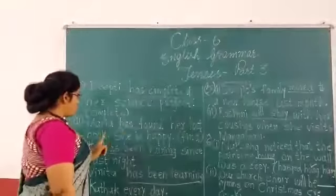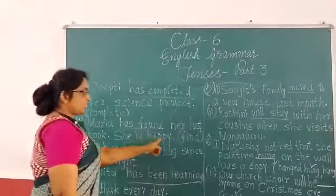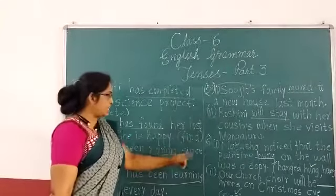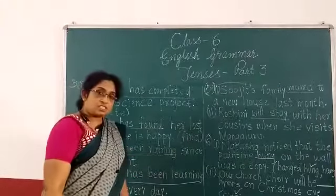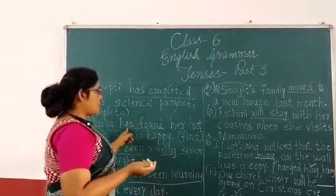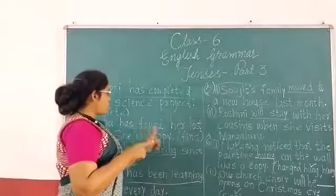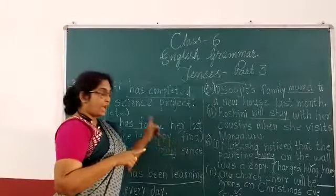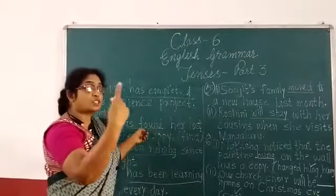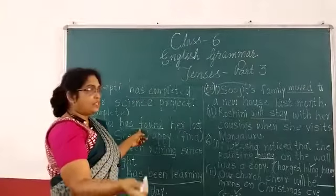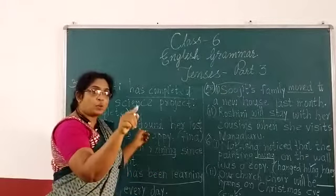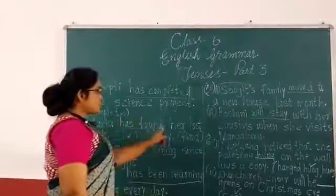'Maria dash a book. She is happy.' — bracket word: find. The present perfect tense of 'find' is 'has' plus the past participle of 'find.' The past participle of 'find' is 'found,' so the answer is 'has found.'